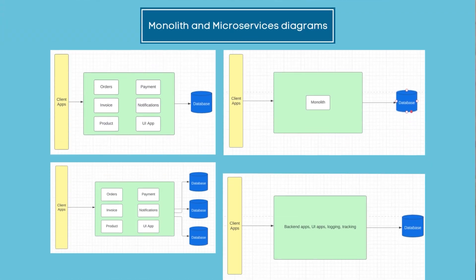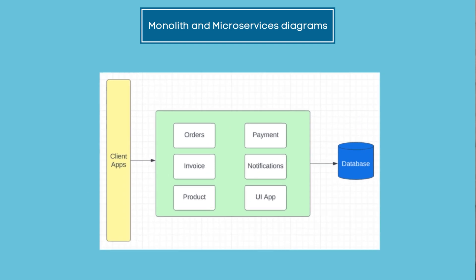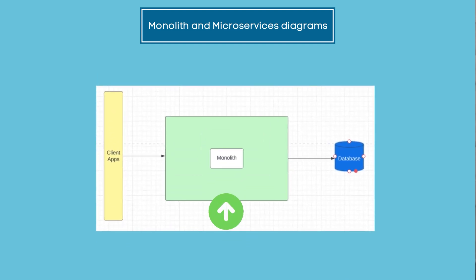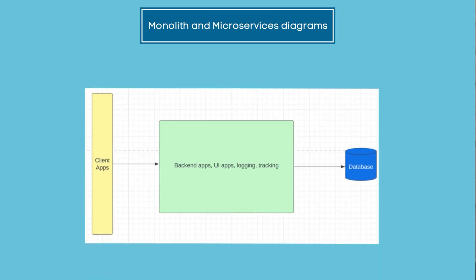Before we go deep into every concept, let's try to understand the high-level design and architecture of monoliths and microservices. We'll use these diagrams throughout the video. These four diagrams show different variations of a monolith. A monolith is a codebase which can have separate modules inside it, but there will be a single database and just one client layer — a typical three-tier architecture. In some cases there is no modularization; in others there can be modularization with different databases, or one single app with different modules deployed as a single unit.